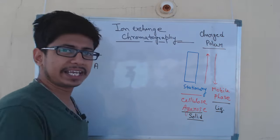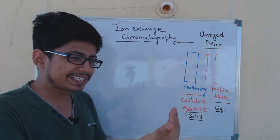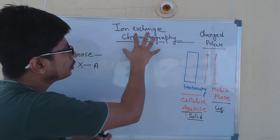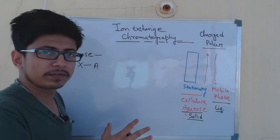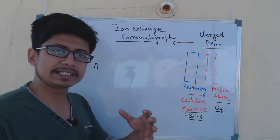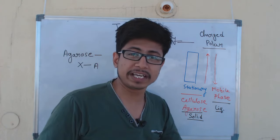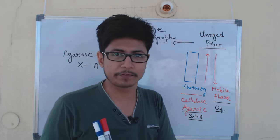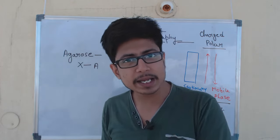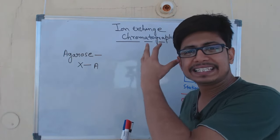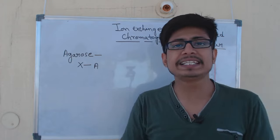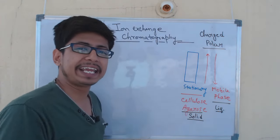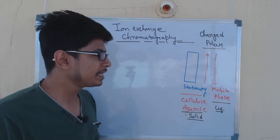The idea of ion exchange is to exchange specific polar molecules. There are two different types of ion exchange chromatography: cation exchange chromatography and anion exchange chromatography. In cation exchange chromatography the column retains cations, while in anion exchange chromatography the column retains anions.